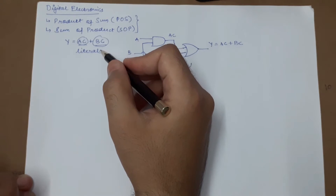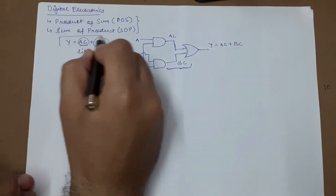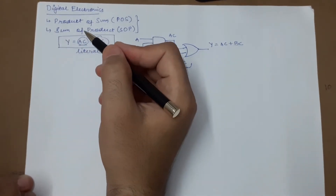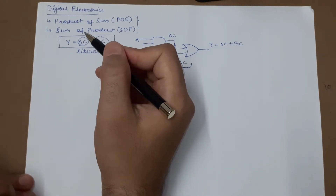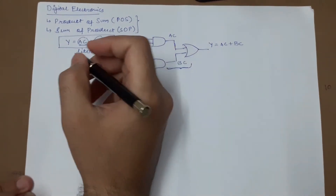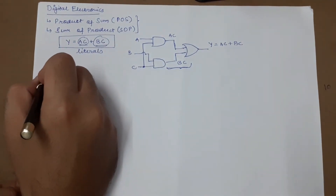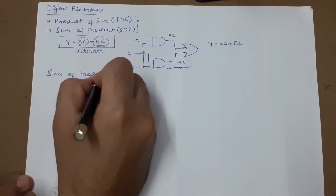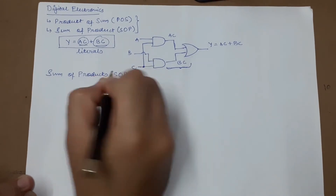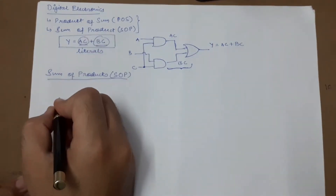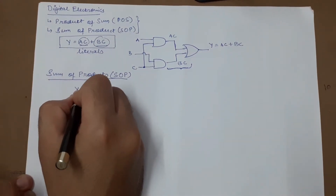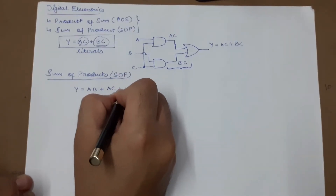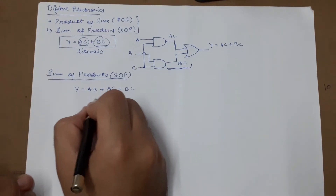These forms reduce the expression to its simplest form. If it is already in the simplest form, we have to do nothing, but whenever the terms are in a complicated manner, we need to simplify them. For the sum of products, let's take an example: Y equals A plus AB plus AC plus BC.